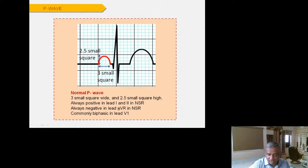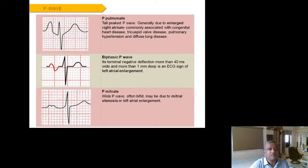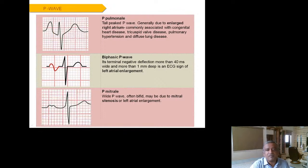P pulmonale is a tall peaked P wave seen in pulmonary hypertension and right atrial enlargement. P mitrale is an M-shaped P wave characteristic of mitral stenosis. A biphasic P wave is also a sign of left atrial enlargement and is seen in conditions other than mitral stenosis. In mitral stenosis, the P mitrale — the M-shaped wave — is the characteristic finding.